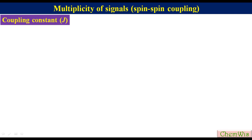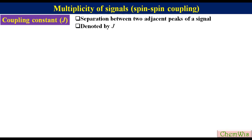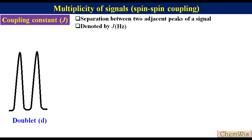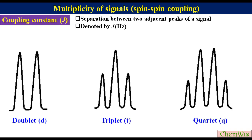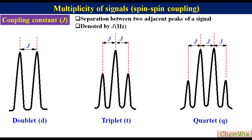Coupling constant or J value. The separation between two adjacent peaks of a signal is called the coupling constant. It is denoted by J and expressed in Hertz. In a doublet, a triplet, and a quartet, these are the J values.